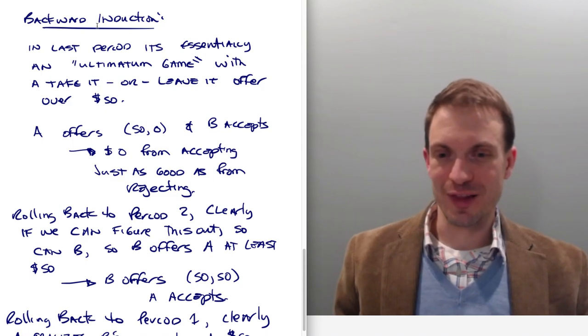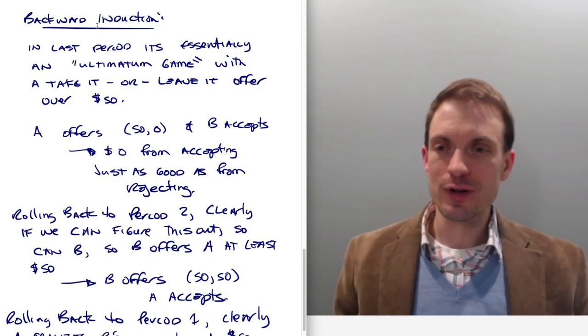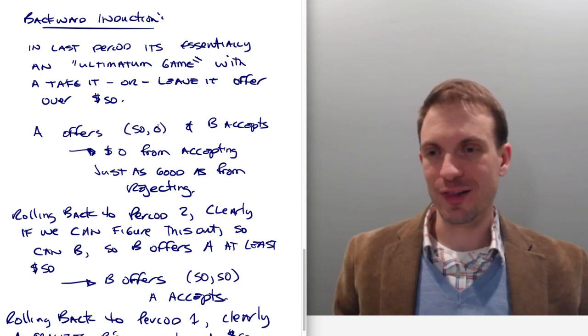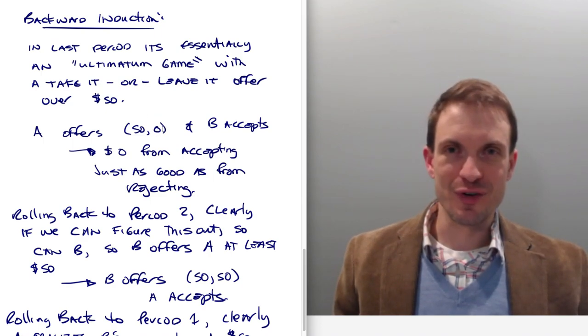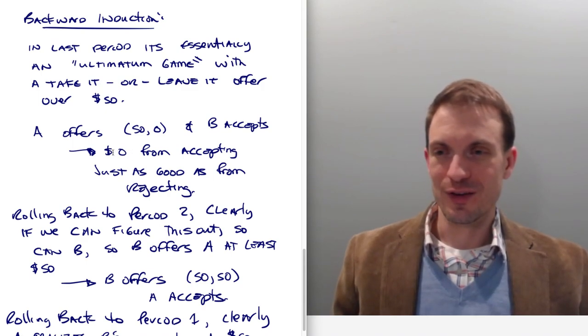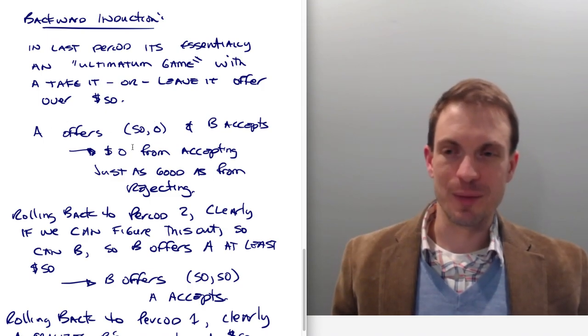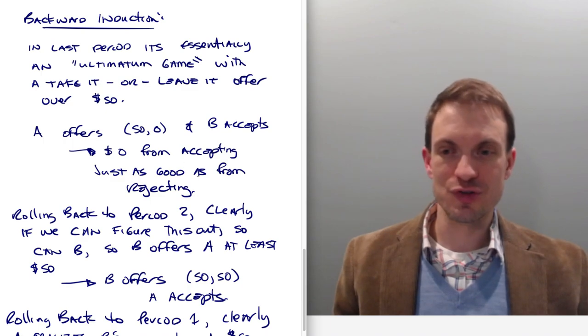We're just going to dispense with that logic. If you want to do it that way, cool. If not, we'll just assume that B is going to be exactly indifferent between this zero from A's offer, or the zero they get from rejecting. So they're just going to accept. So I say A offers in the last period, A offers 50 to themselves, zero to B, B is going to accept. They're going to get zero from accepting, which is just as good as from rejecting.